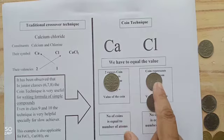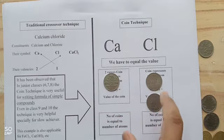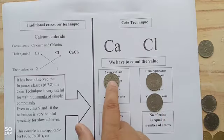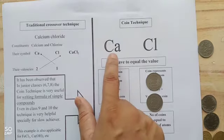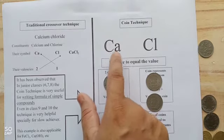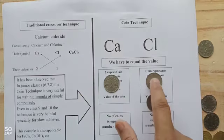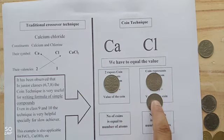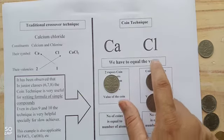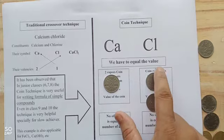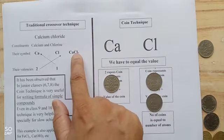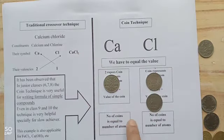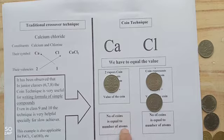Now, each coin represents 1 atom. In this formula, there is a single coin for calcium, meaning the number of atoms of calcium is 1. We need two 1 rupee coins, so the number of atoms of chlorine is 2. The formula will be CaCl2. Number of coins equals number of atoms.